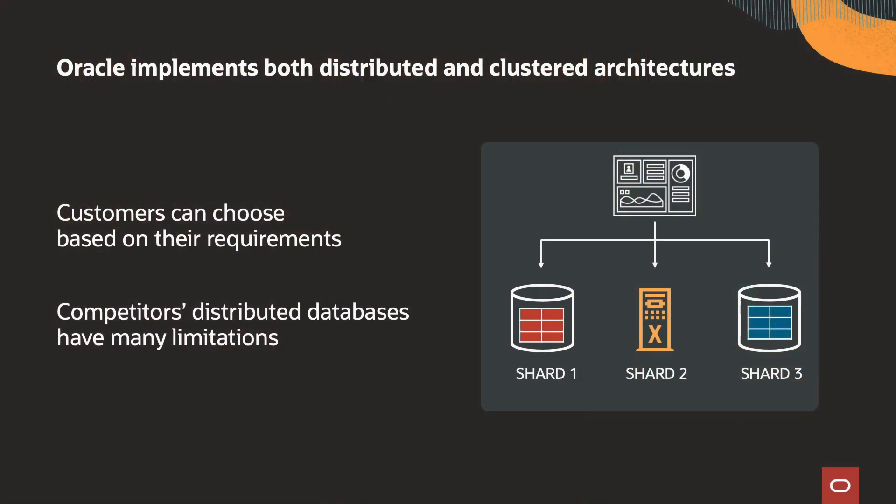In contrast, competitors' distributed databases generally have many functional limitations. They scale poorly when data access is not localized. They have high latency due to distributed data access and distributed commits. And they can't fail over applications without aborting active connections and transactions.